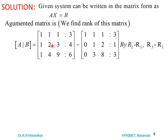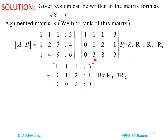We perform R2 − R1 and R3 − R1 to zero out the first column below the diagonal. This gives [1, 1, 1 | 3; 0, 1, 2 | 1; 0, 3, 8 | 3]. Next, to zero the position below the second pivot, we apply R3 − 3R2.